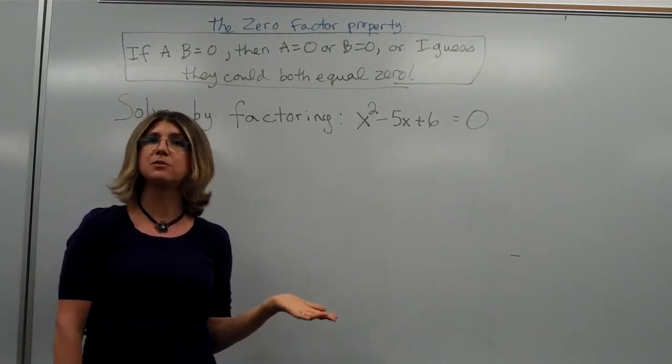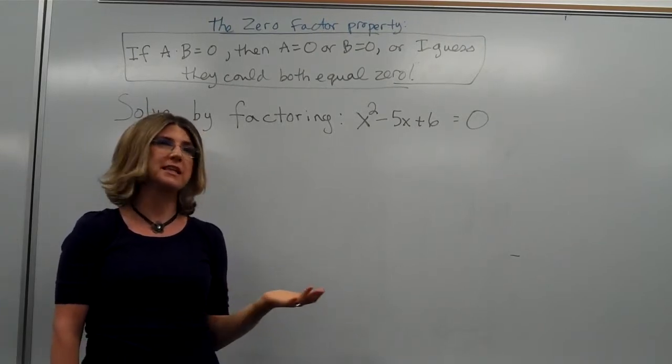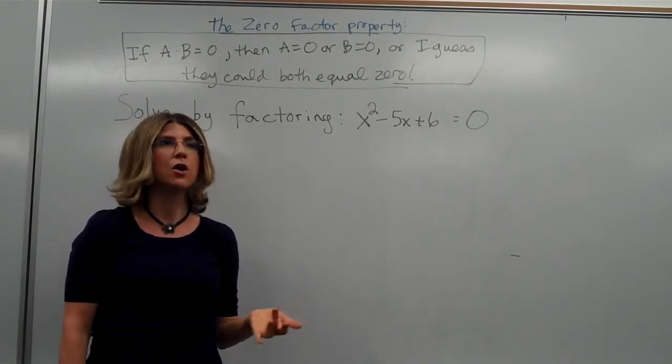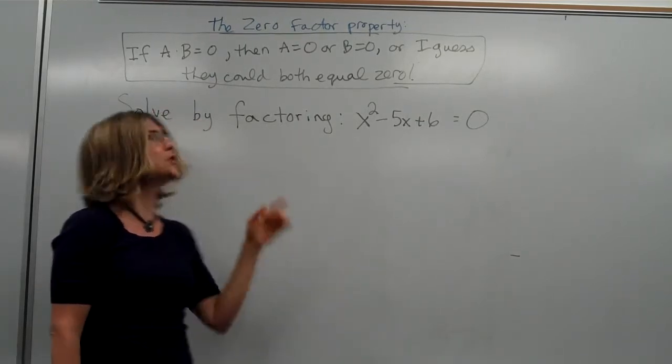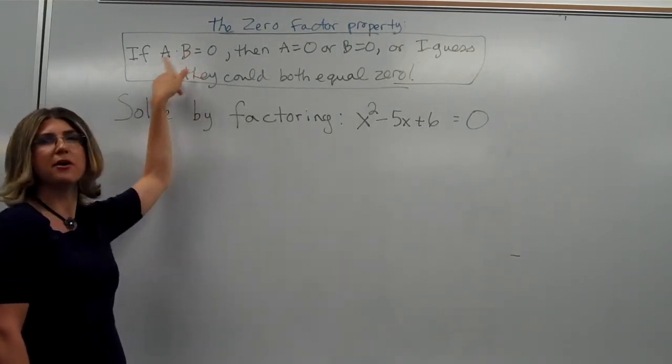We can't take negative one-third times two and get zero, or 16 times 23 and get zero, or two-thirds times negative six and get zero, right? One of those two things, if we're multiplying them together and we get zero,